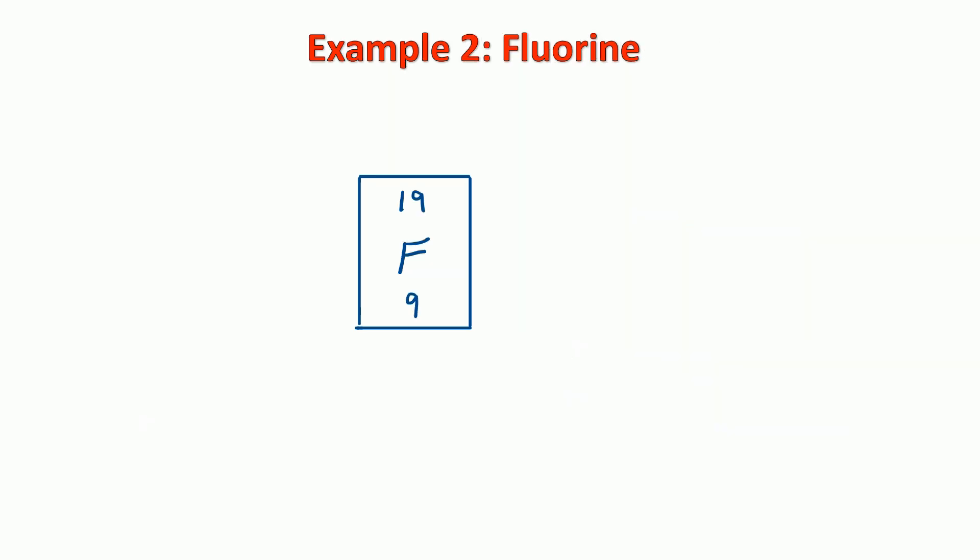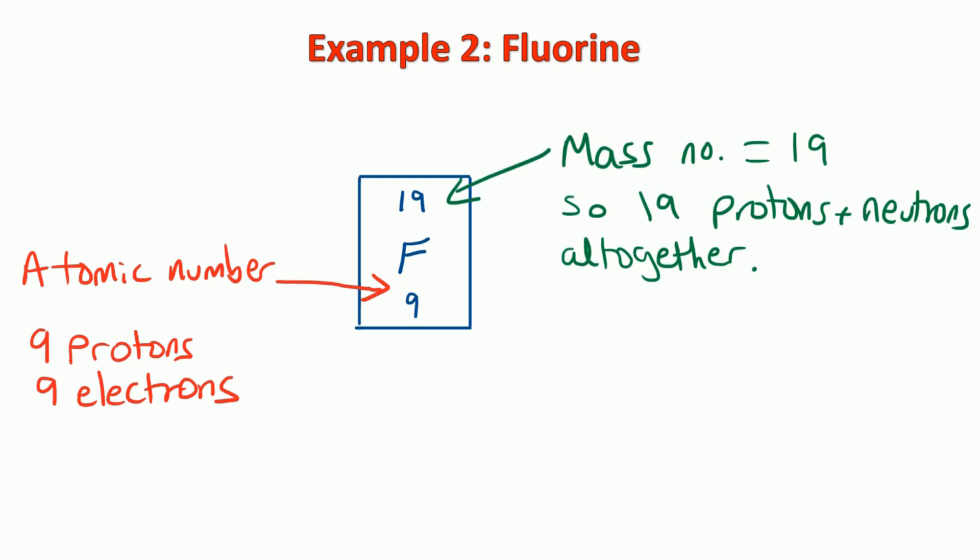Let's look at another example - fluorine. The box for fluorine on the periodic table has this information. It's got the symbol in the middle, F for fluorine, and then it's got the mass number of 19 at the top and the atomic number of 9 at the bottom. Now the atomic number, remember, is telling us there's 9 protons and also 9 electrons. The mass number is 19. So that means there's 19 protons and neutrons all together when we add them together. So to work out the number of neutrons, it's the mass number minus the atomic number. So that's 19 take away 9, which is 10 neutrons.